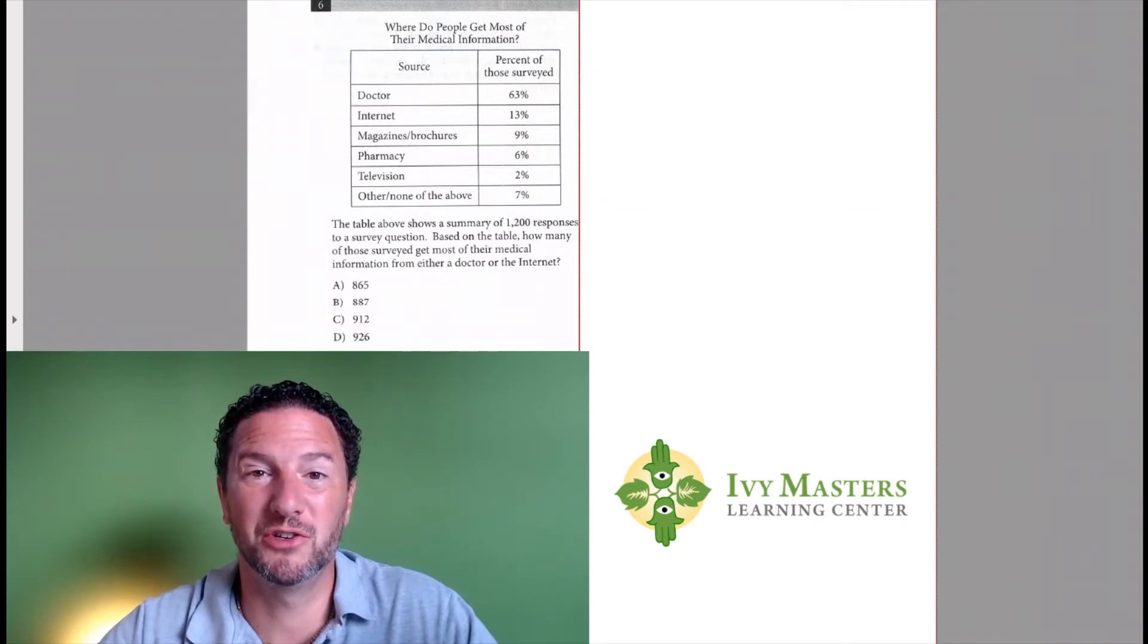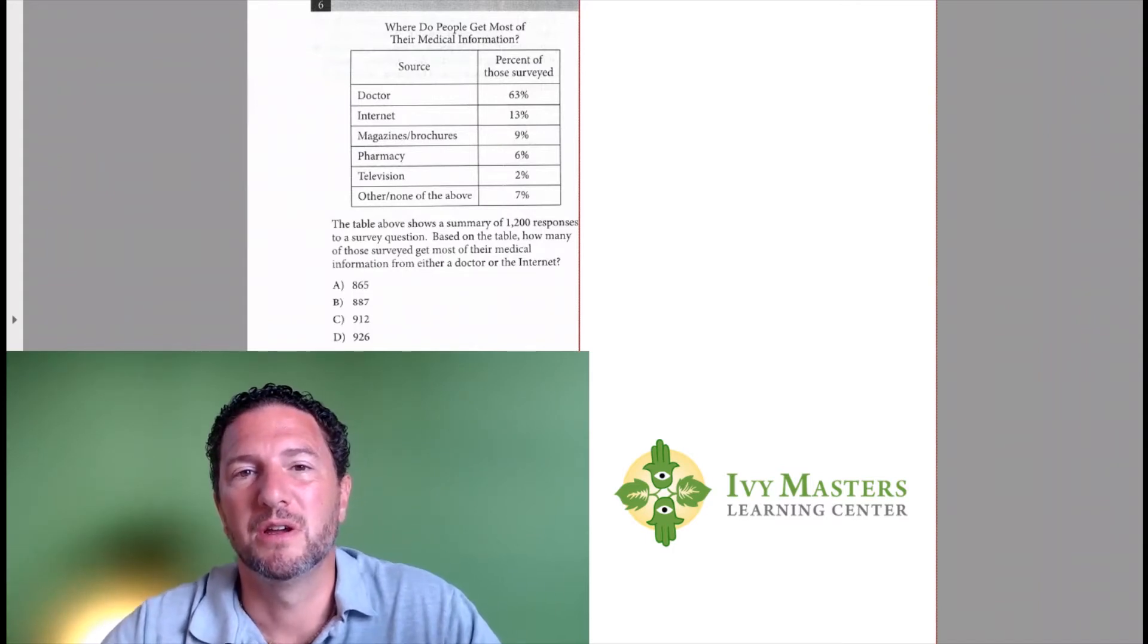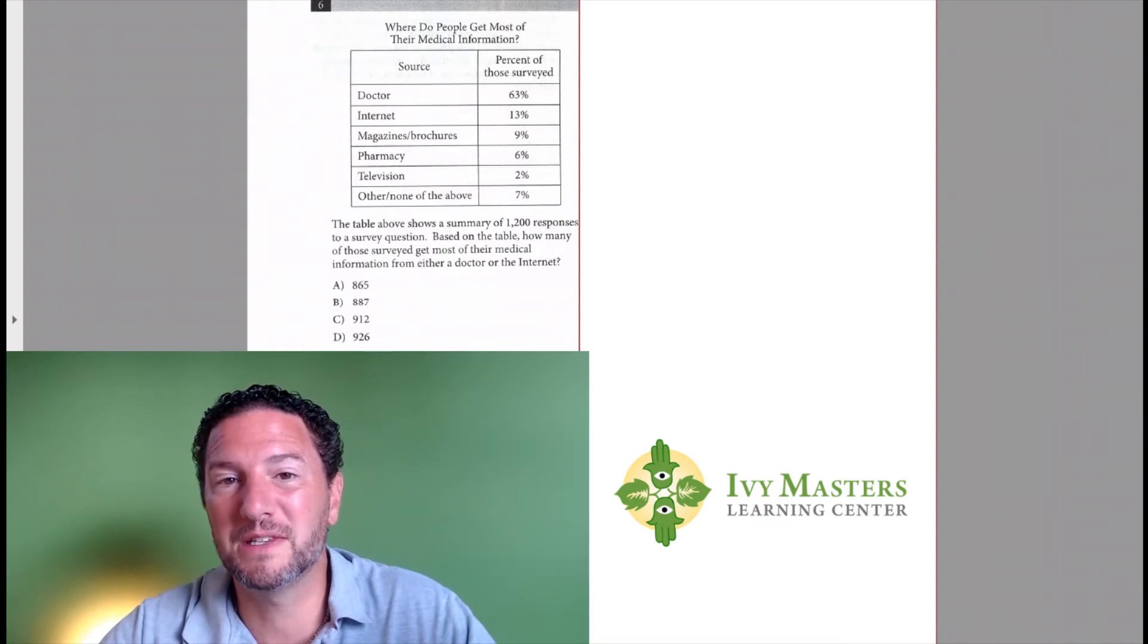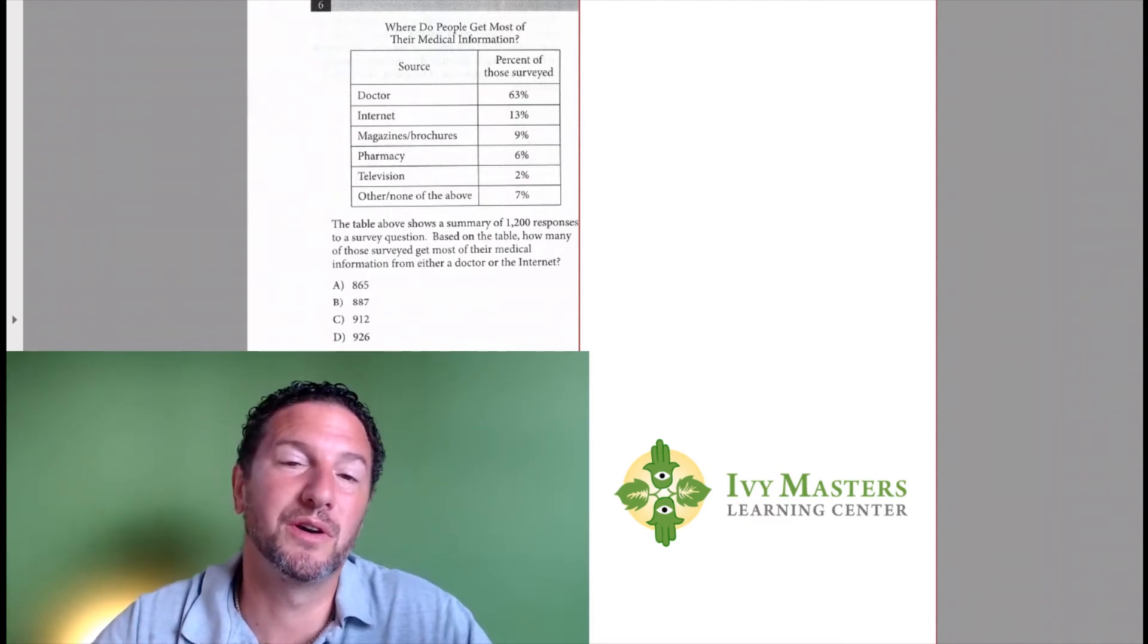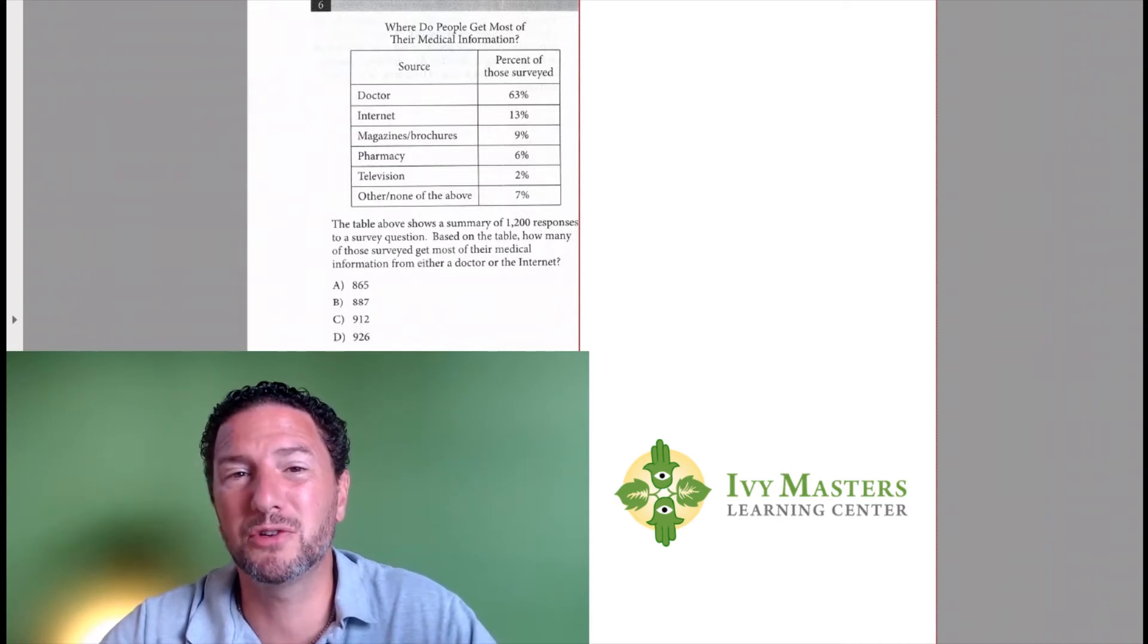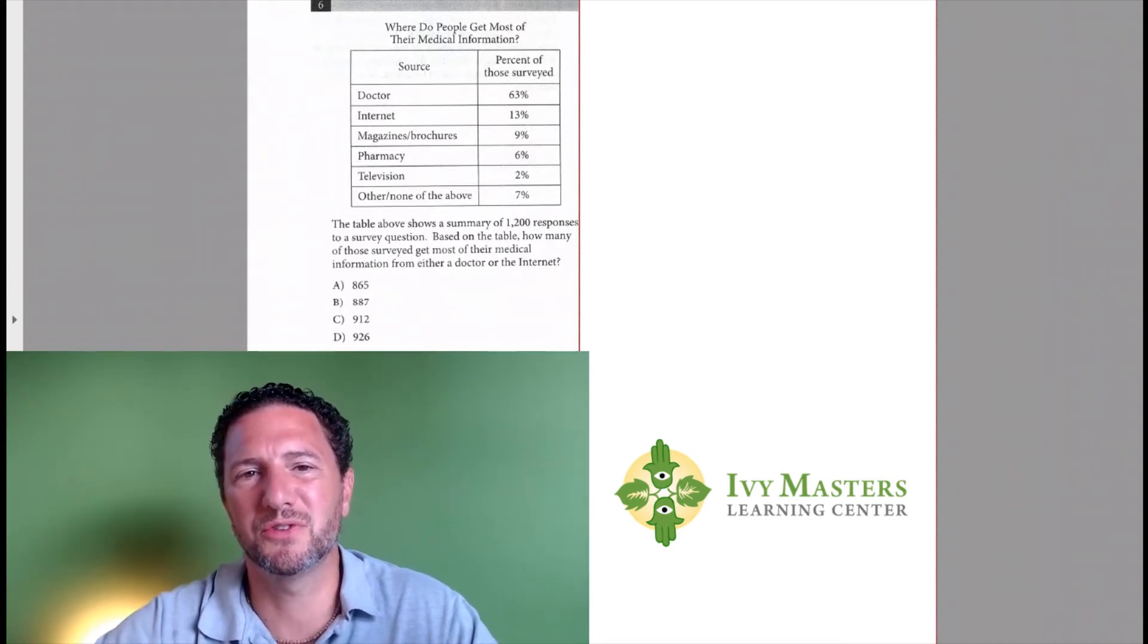Here's some troubling information: 37%, that's more than one in three people, get their medical information from the internet, from magazine, a brochure, a pharmacy, or television. Pharmacy is probably a much more reliable source than the others, but only 63 percent go to their doctor for medical advice. Seems puzzling.